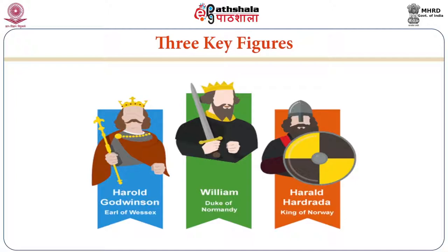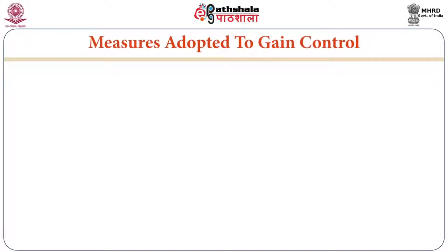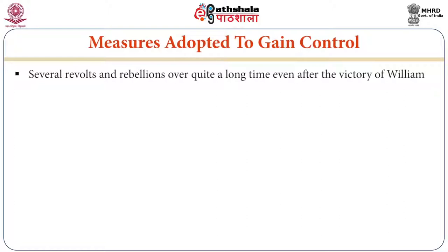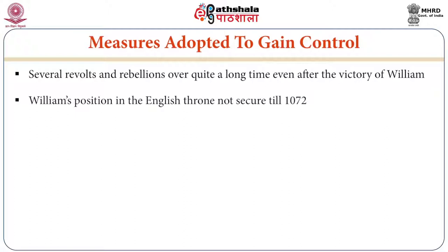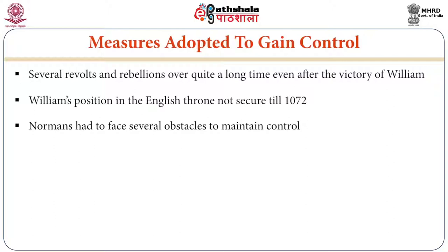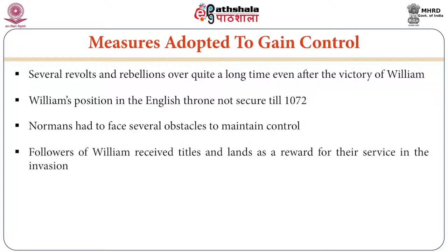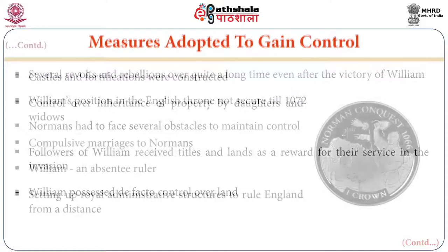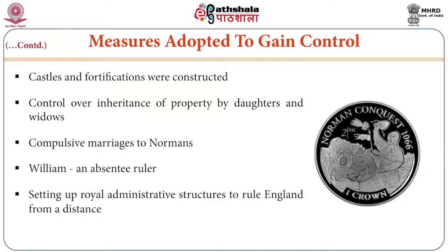Now, a few measures were adopted to gain control. There were several revolts and rebellions over a long period even after William's victory. William's position on the English throne was not secure until 1072. Normans had to face several obstacles to maintain control over social and political issues. Followers of William received titles and lands as reward for their service in the invasion. William possessed de facto control over the land and territory of England. Castles and fortifications were constructed as instruments of cultural and political control.